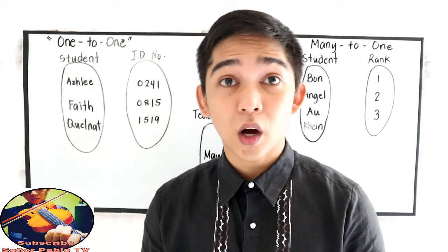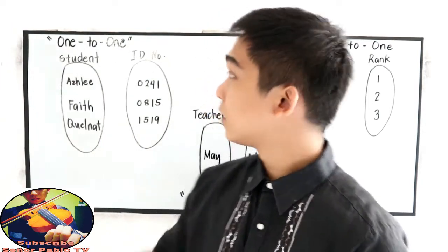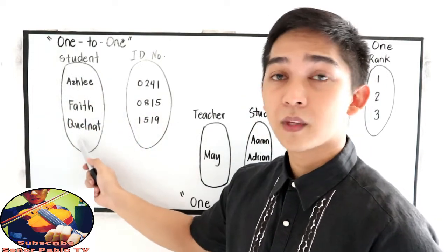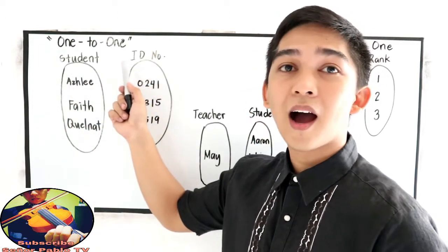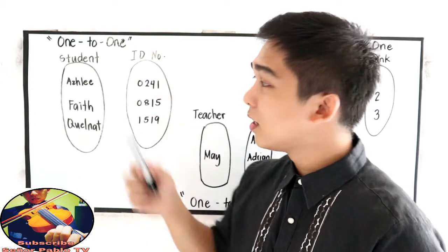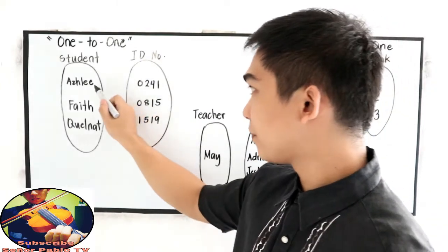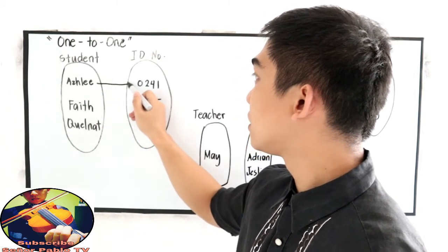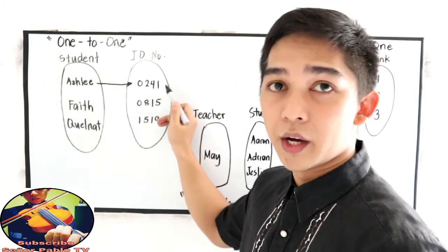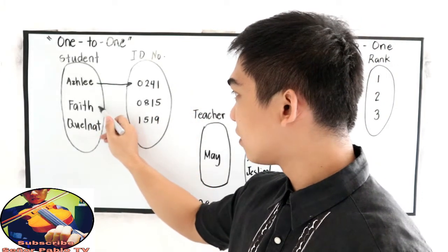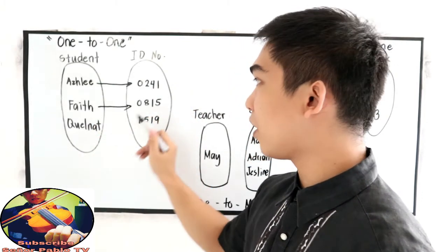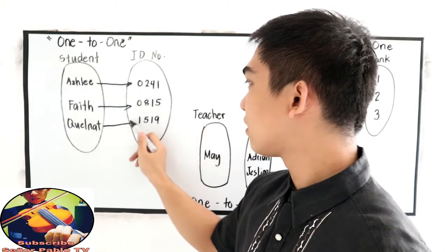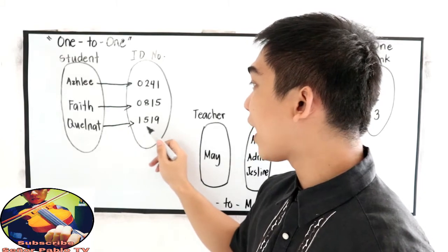Now, let's discuss the one-to-one correspondence. So, one-to-one. Let's say we have a name of a student and their ID numbers. Let's say for Ashley, she has an ID number of 0241. For Faith, ID number of 0815. And for Kel-Nath, we have 1519.